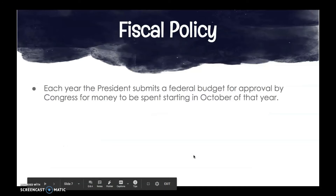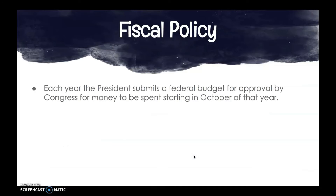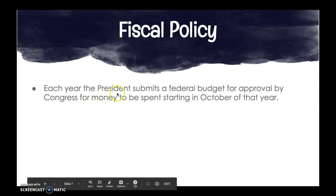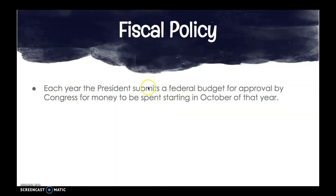Each year, the president will submit a federal budget for approval by Congress for money to be spent. This is the spending, taxing, and borrowing piece of fiscal policy — proposed by the president and approved by Congress.